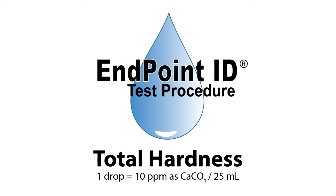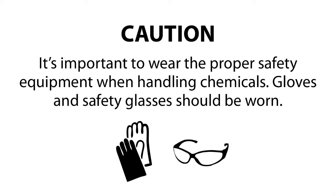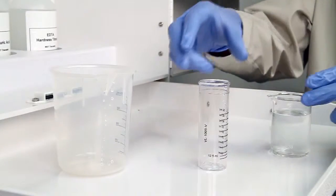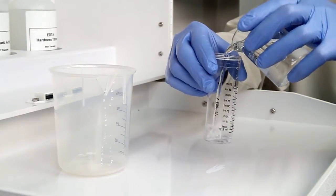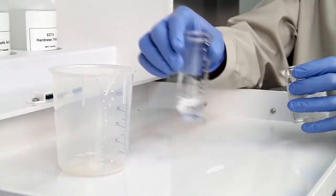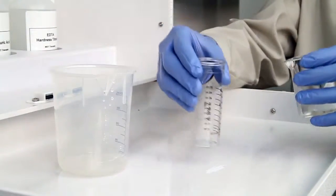This is a demonstration of a total hardness drop count test kit using Endpoint ID procedures. The first step is to collect an accurate sample. The smallest change in sample size will lead to inaccurate results.